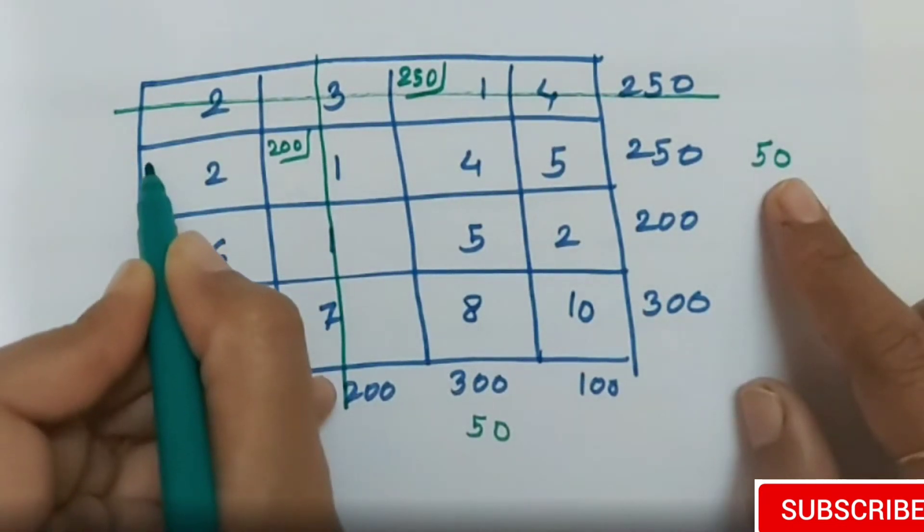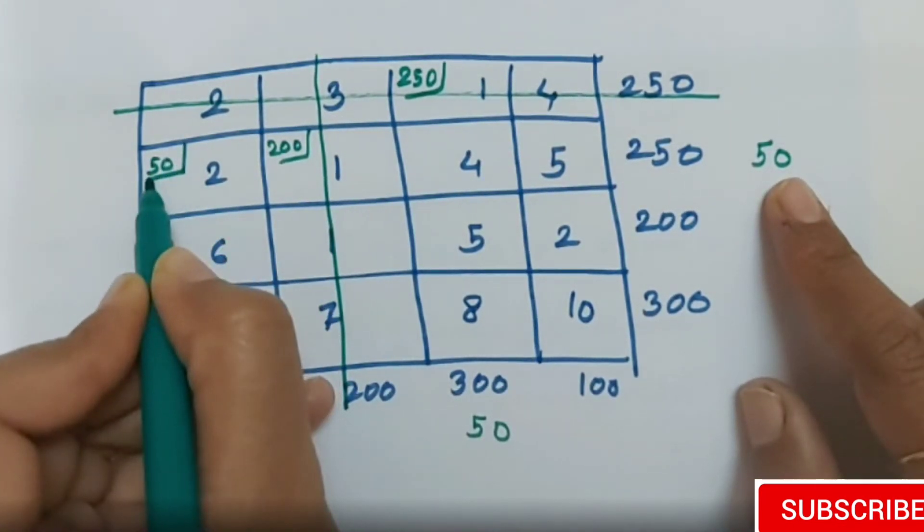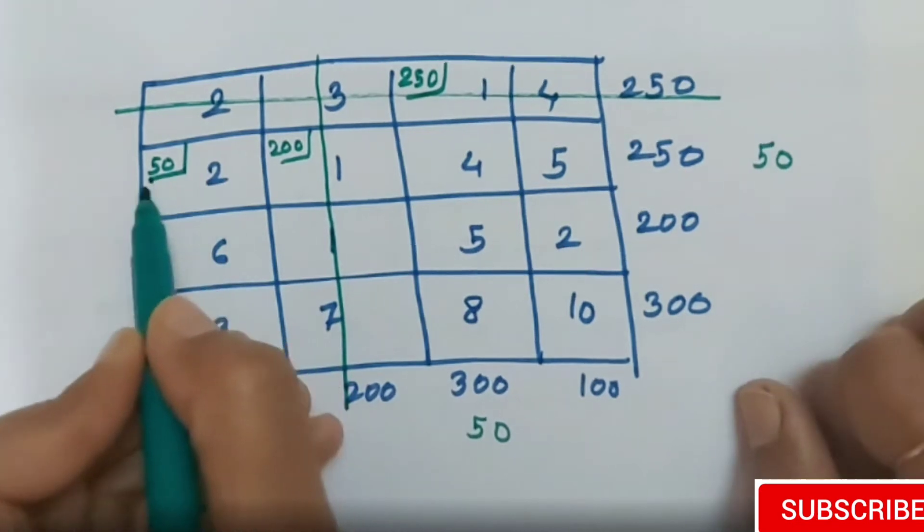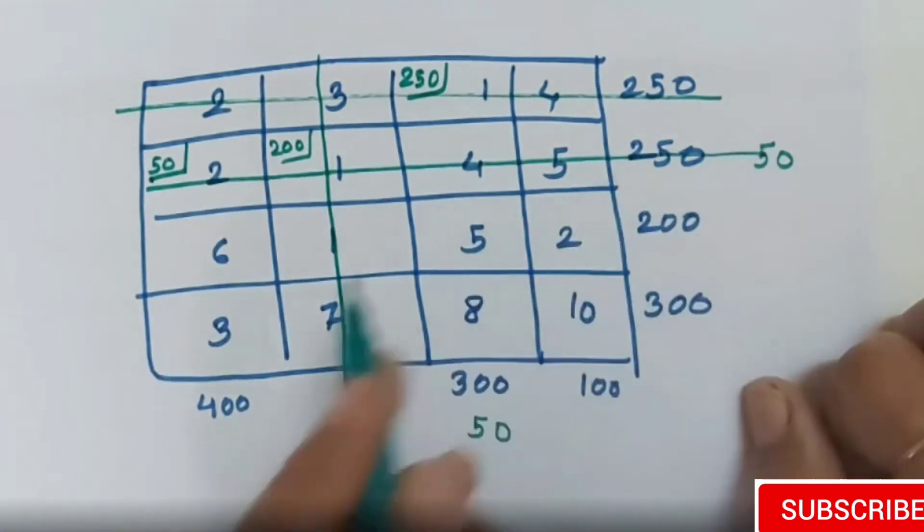So here, 2 to corresponding assign 50. Now assign 50, this will be gone. Subtract 50 from 300 in the row.